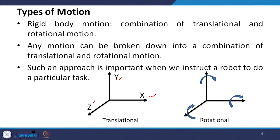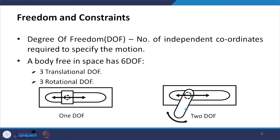Translational motion can be described with the help of x, y, z axes — so there are 3 translational motions. Similarly, we can have 3 rotational motions: rotation about the x axis, y axis, and z axis. In mechanical systems, we often talk about degrees of freedom and constraints, especially when describing a mechanism. For a robot, we talk about how many degrees of freedom it has.